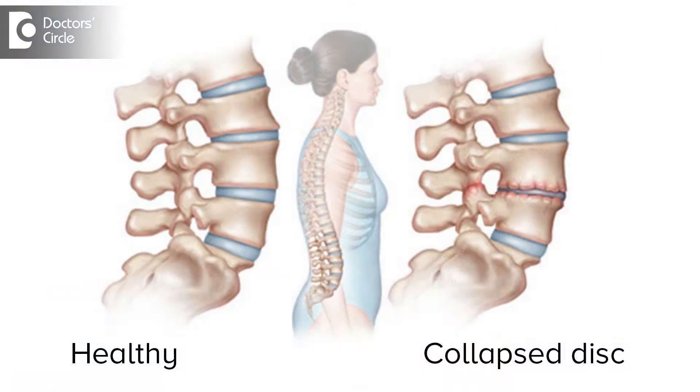In a healthy condition, the disc carries the full weight of the body. But when it degenerates and becomes weakened, it collapses and sinks. When it collapses, the vertical dimension of the disc decreases. When the vertical dimension decreases, the horizontal dimension increases, and this stretches the outer layer of the disc.